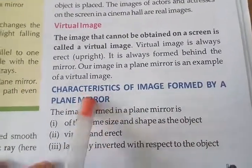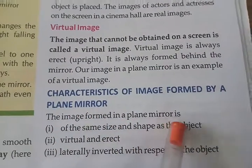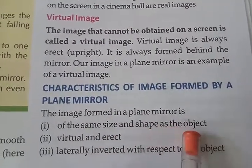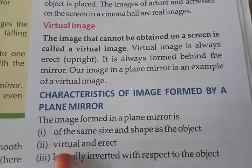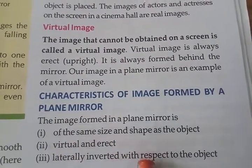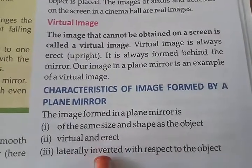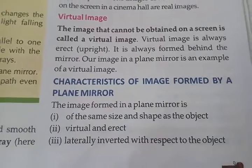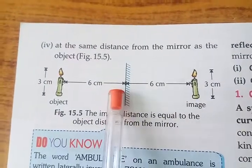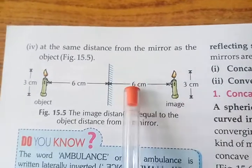Next, the characteristics of the image formed by a plane mirror. First, the image is of the same size and shape as the object. Second, it is virtual and erect — it cannot be obtained on a screen and it is upright. Third, it is laterally inverted with respect to the object — the left portion appears right and the right appears left. Fourth, the image distance behind the mirror equals the object distance in front — for example, if the object is 6 cm from the mirror, the image will also be 6 cm behind the mirror.